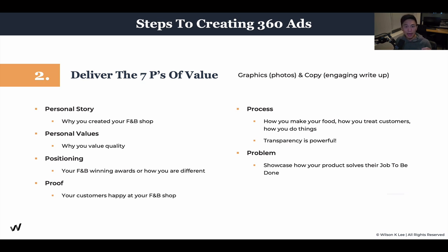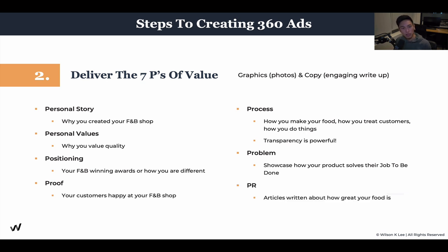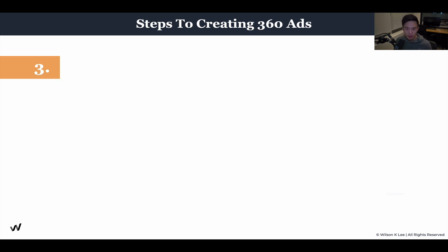Problem — showcase your specific problem and the job to be done and how you're solving it. For example, if you're selling poke in downtown Vancouver, the problem you're solving is that people just want to grab a quick, healthy to-go lunch that doesn't require too much preparation. Tell them the problem and tell them your solution. And PR — articles are huge. We cover this in module six on how to get press releases and media to talk about you. These are the seven P's of value that you should be creating for your ads.